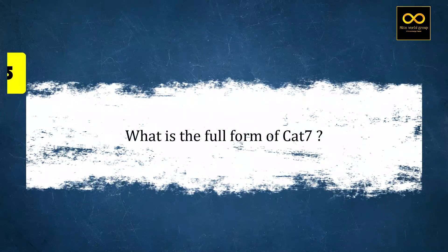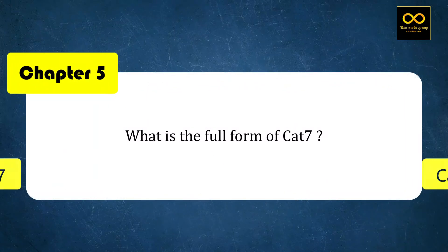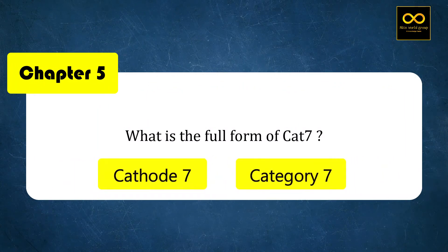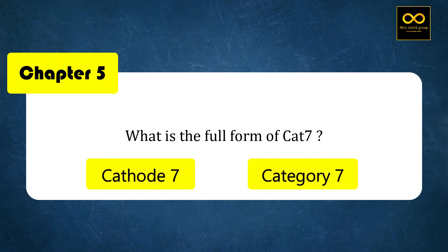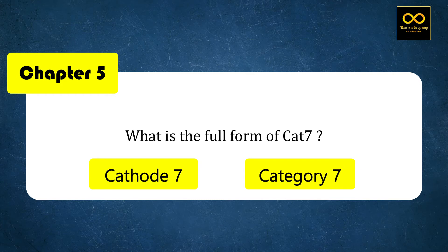What is the full form of CAT7? CAT7 is a full form — the right answer is option B: Category 7.